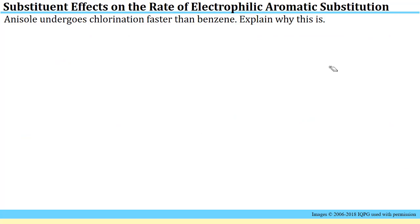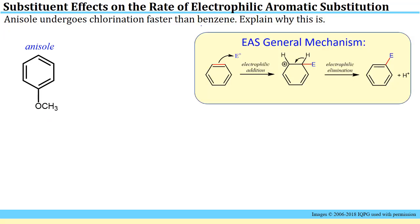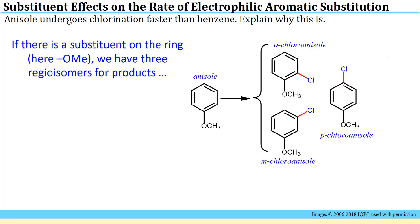Our next question points out the observation that anisole undergoes chlorination faster than benzene does, and we're asked to explain the reason for this. Anisole is just benzene with a methoxy group on it. Once we know that, we have to think about electrophilic aromatic substitution on this substrate. We first recall the general EAS mechanism: an electrophile attacks by electrophilic addition, then you have electrophilic elimination of a proton, substituting a new group onto the benzene ring.